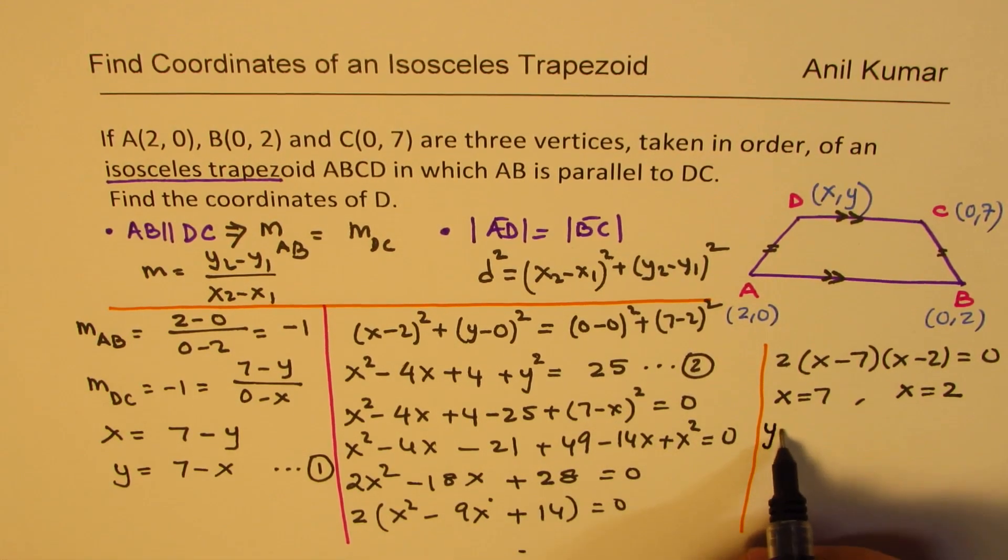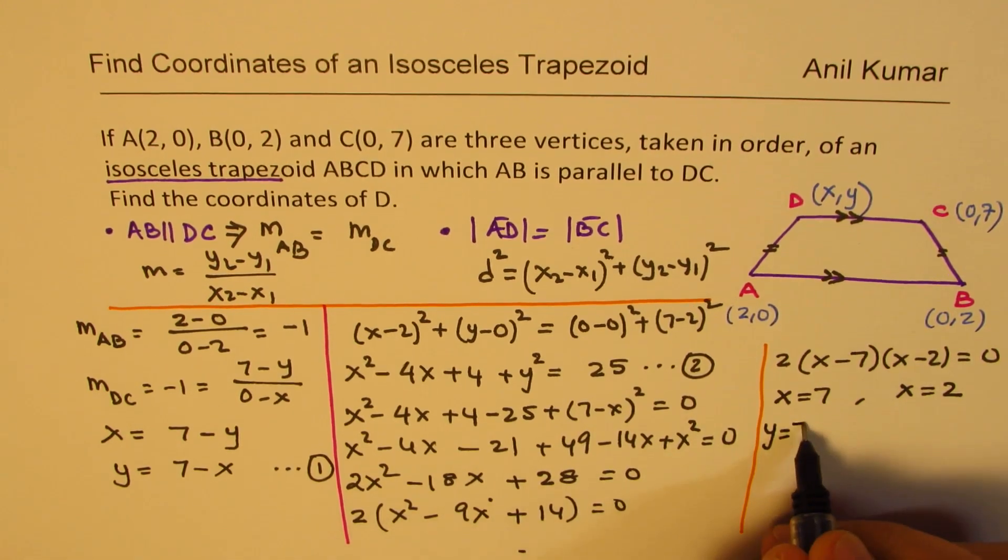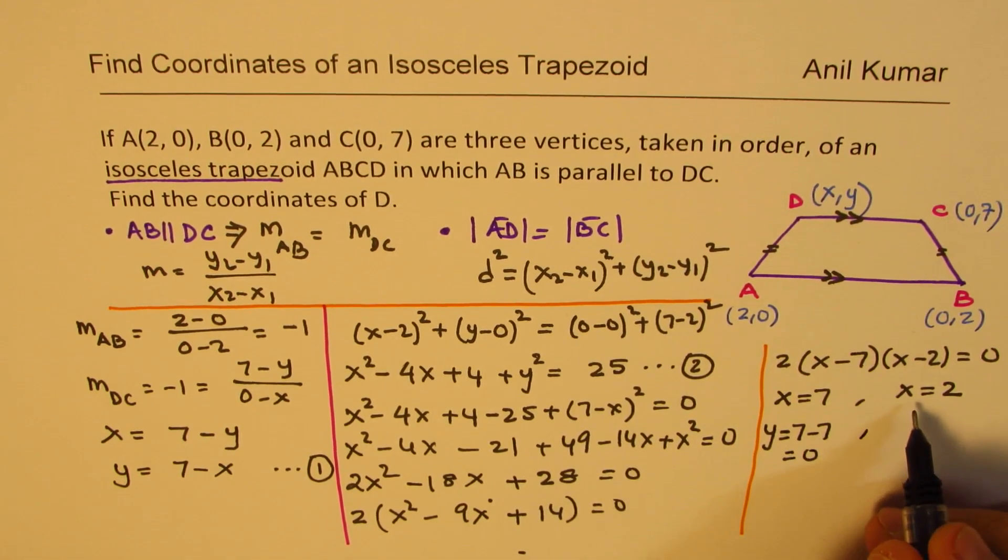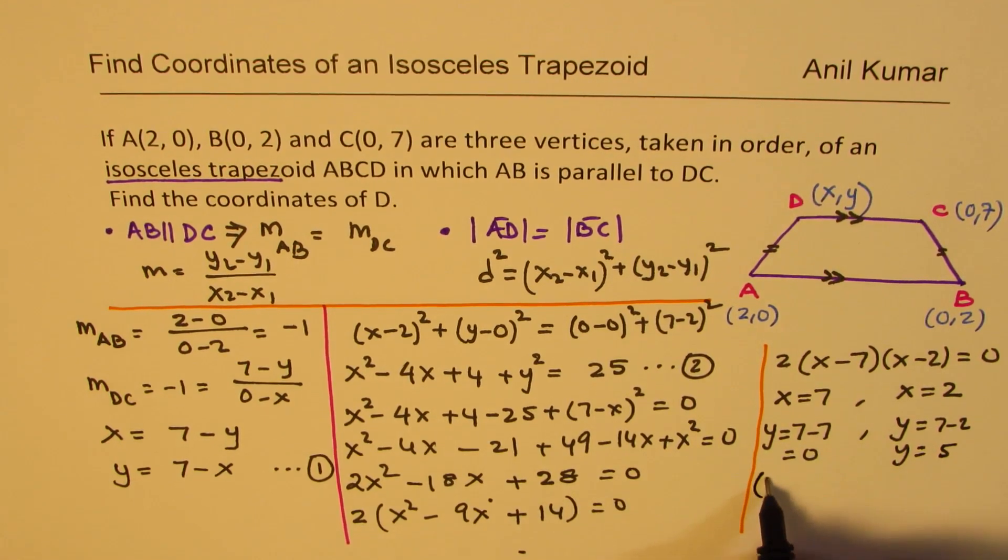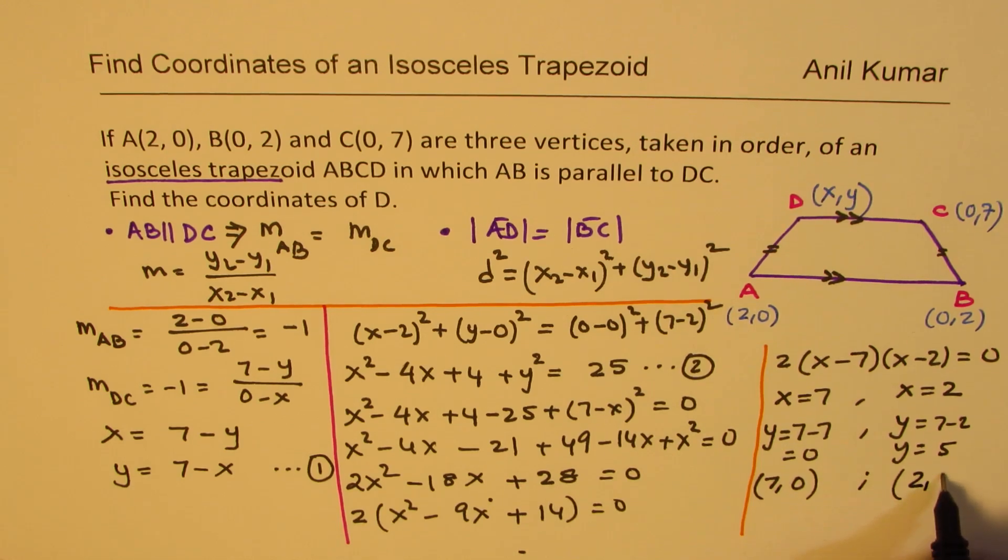Substituting these values, we get the Y value also. So if I substitute 7, I get Y equals to 7 minus 7, which is 0. And if X is 2, then we have Y equals to 7 minus 2. So we have Y equals to 5. So one coordinate point is (7,0). The other one for us is (2,5). Correct.